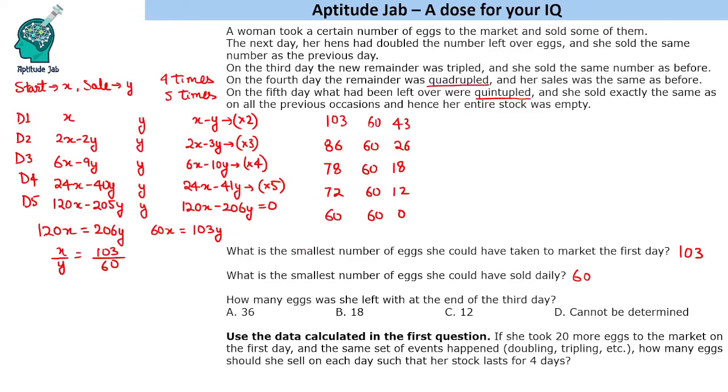The second question is done. The third question is: how many eggs was she left with at the end of the third day? If someone has solved this, it is very natural that people might answer 18. But see, this is one of the values.